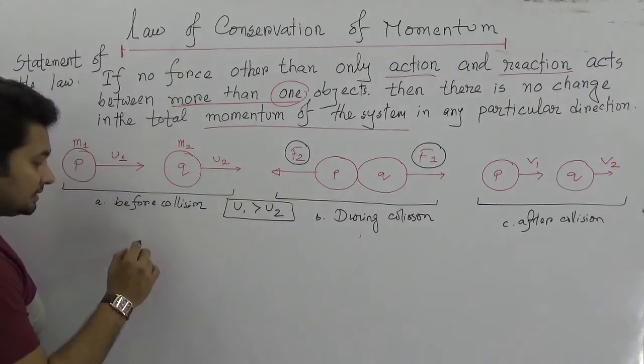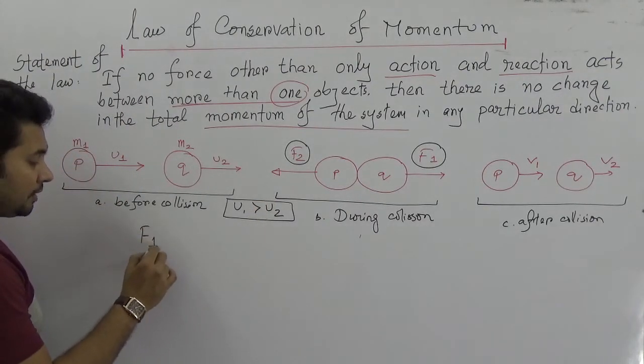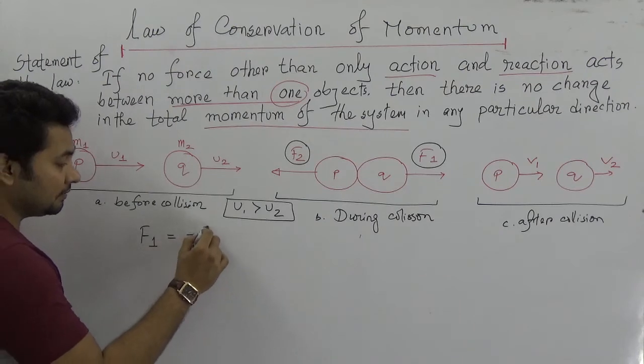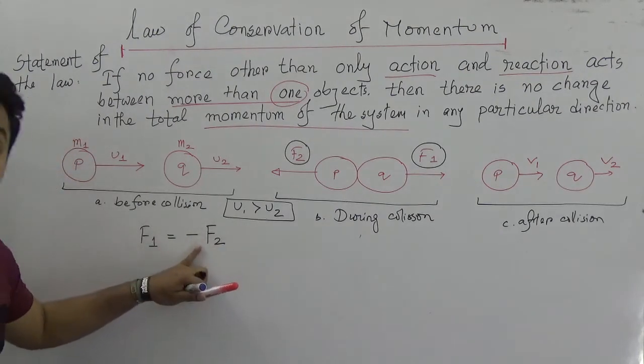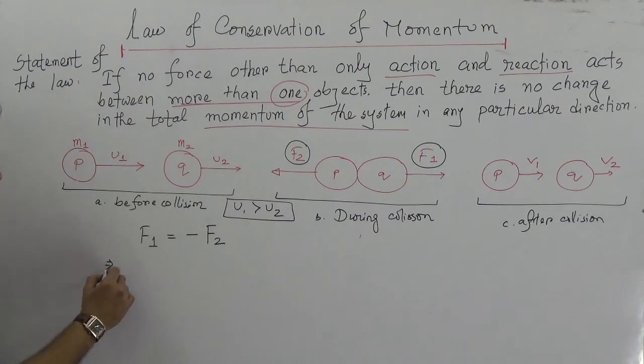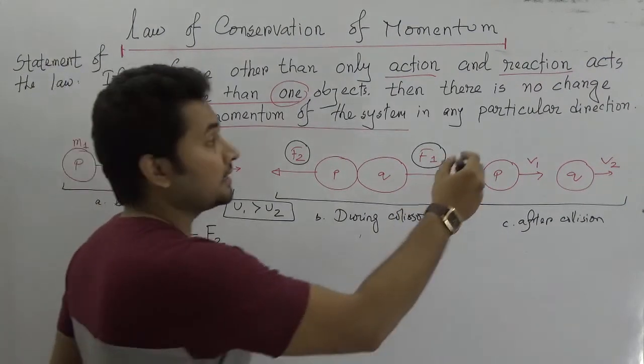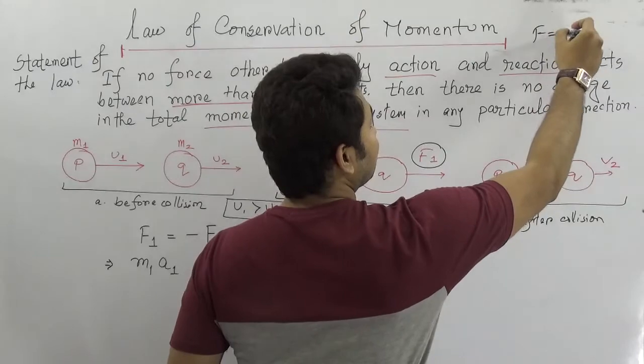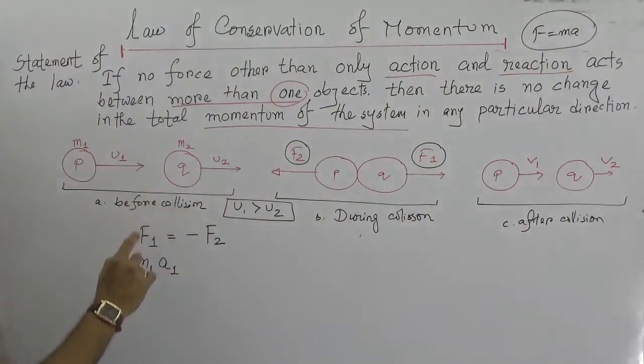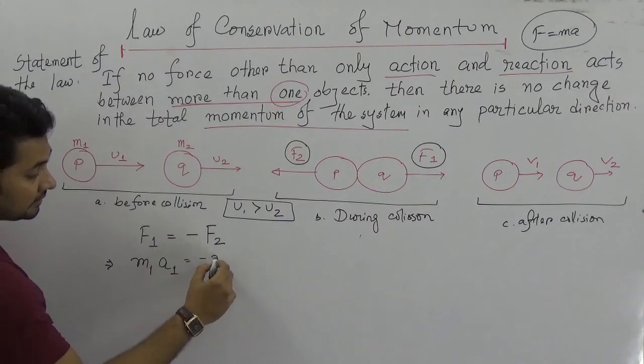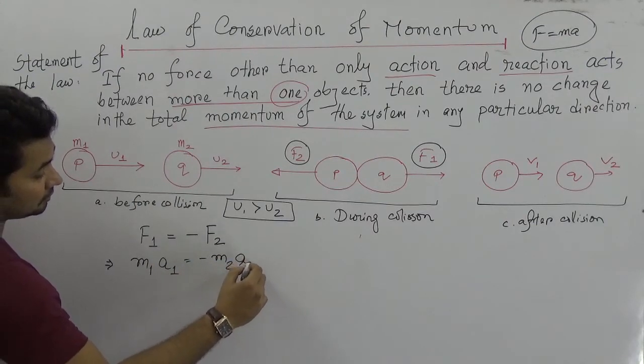P will give a force, an action which is F1, and according to Newton's third law F2 will be the same but in opposite direction. So from the third law we can say that F1 is equal to minus F2 as its direction is changed.